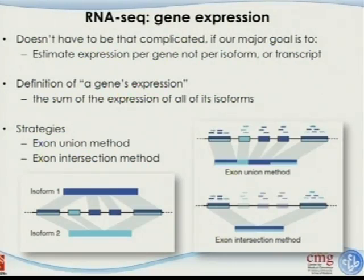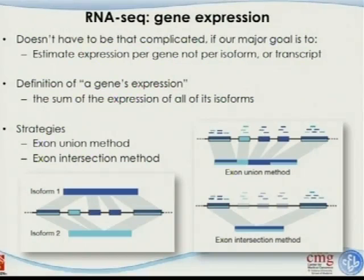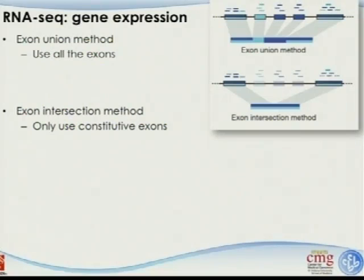If we go this route, there are still two general approaches. The first is called the exon union method. For the first isoform and second isoform at the genome level, some exons are unique to each and some are shared. The exon union method focuses on everything — as long as an exon is present in any of the isoforms, it is counted as part of the overall gene length. The contrary approach is the exon intersection method, which only focuses on exons present in all isoforms, getting rid of the alternative-spliced ones.